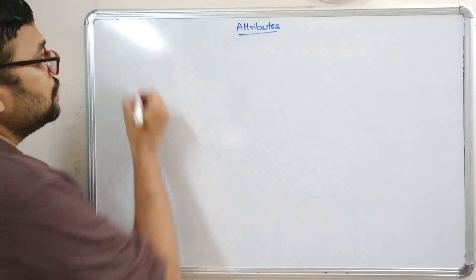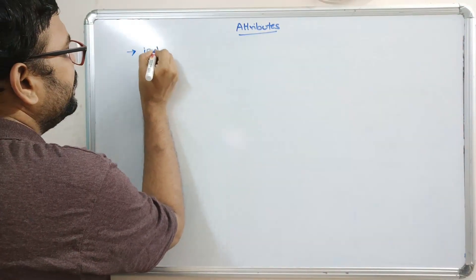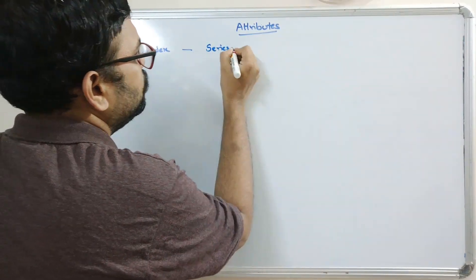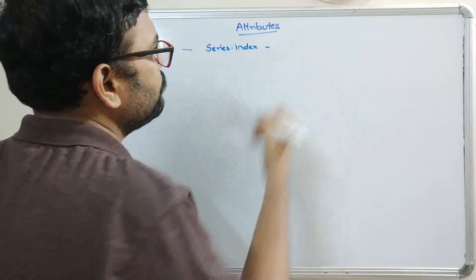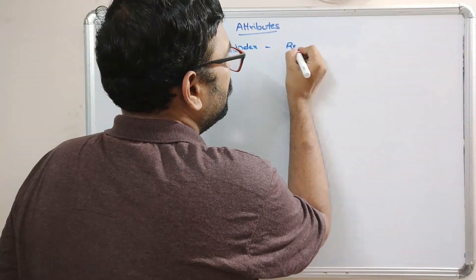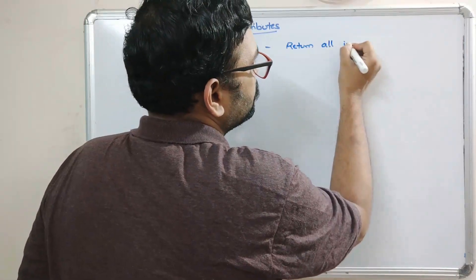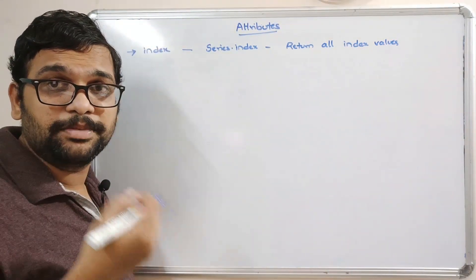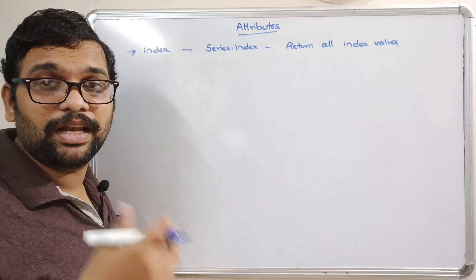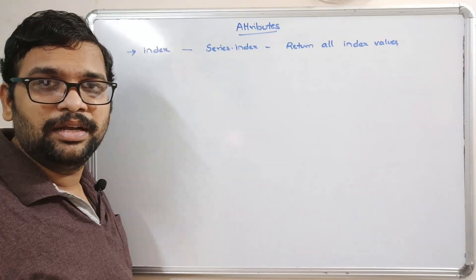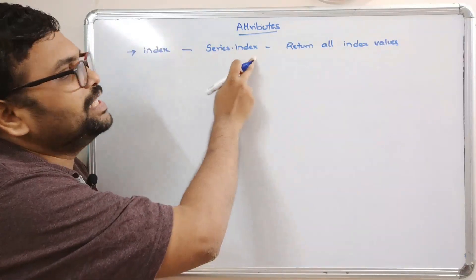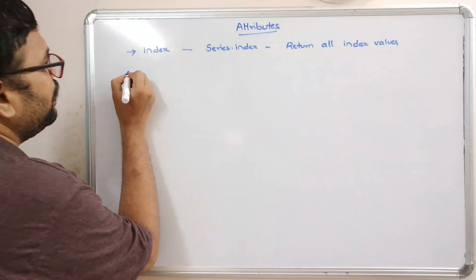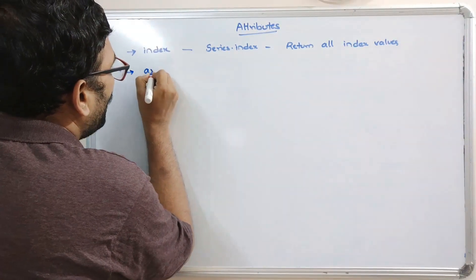The first attribute is index. The syntax is series.index, and this will return all the index values. Those index values can be numerical starting from zero, or custom values you have given. While creating a series we can change the index values, and those index values will be returned by this attribute so we can know what type of index is given for the series.